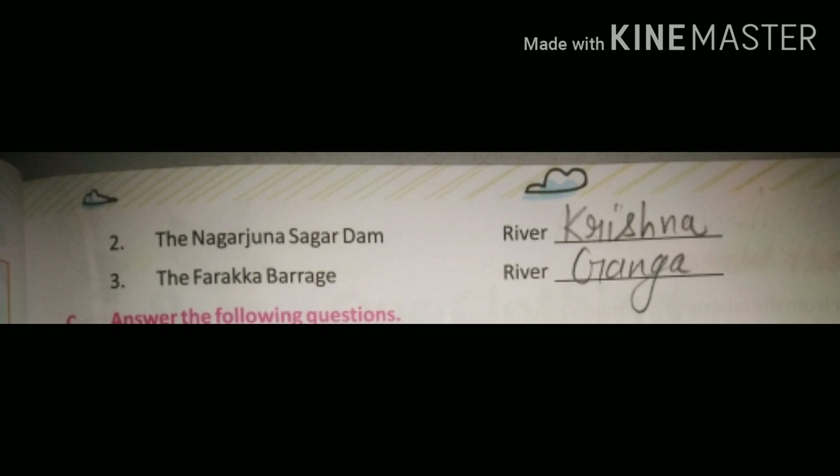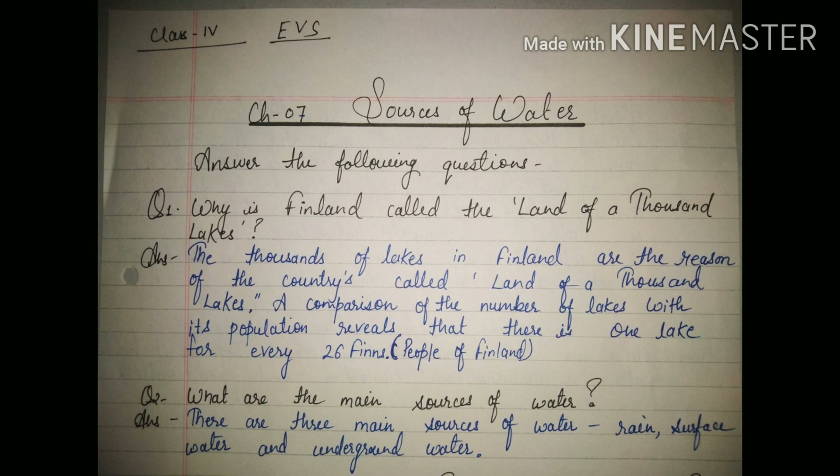Third, the Farakka Barrage is built on the river Ganga and it is in West Bengal. But there is no need to write the city names — just write the name of the river only. Now let's move to the question answers in the notebook.